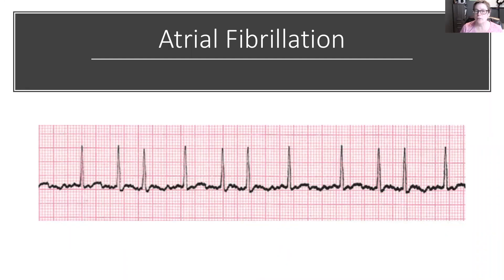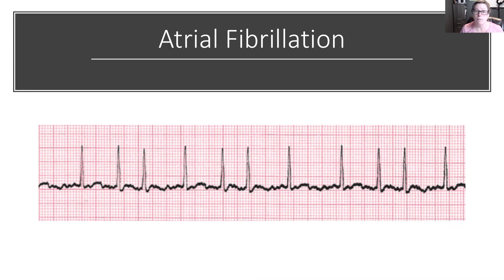In this section, we'll be looking at atrial fibrillation. Atrial fibrillation is a rapid, chaotic, unorganized rhythm. What probably stands out to you just looking at this right now is that the underlying isoelectric line is all irregular — it's like someone has taken a pen and just squiggled lines all the way across. That is a characteristic feature of atrial fibrillation. We call that either fine fibrillatory waves or coarse fibrillatory waves. Fine just means they're really small and coarse means they're a little bit larger.